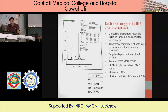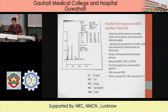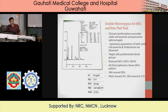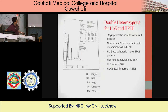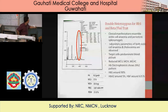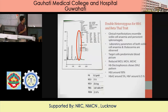Double heterozygous for HbS and beta thalassemia: there is low MCV, MCHC, and a typical S-F-A2 pattern on hemoglobin electrophoresis. You get a high A2 (near about 6.3%) and a high S along with low hemoglobin and other low indices. The diagnosis is double heterozygous for HbS and beta thalassemia — the key finding is both high S and high A2.